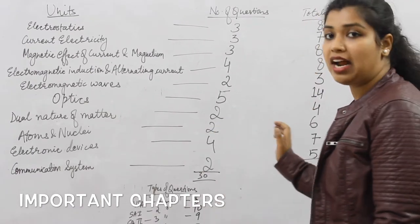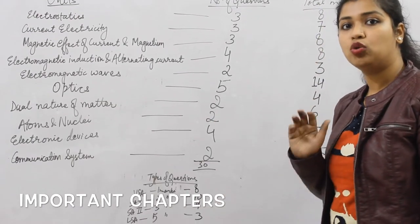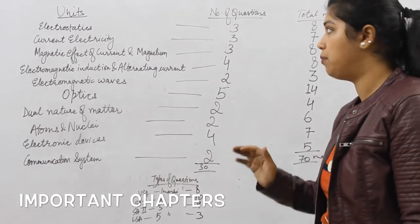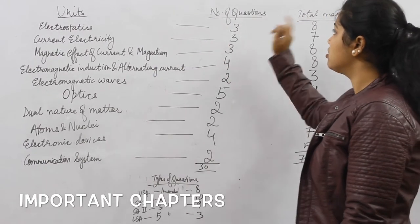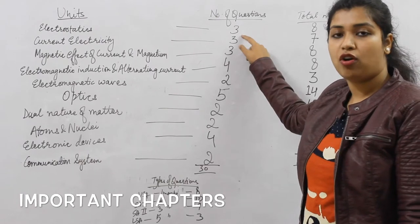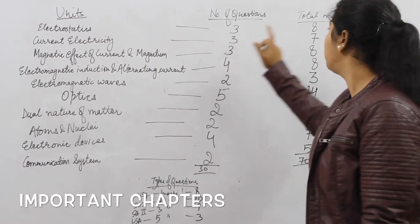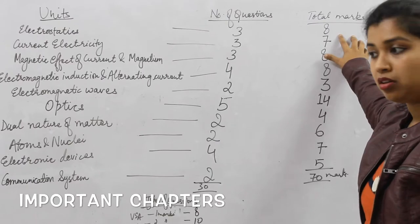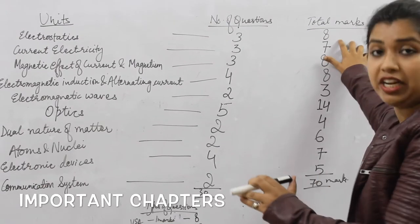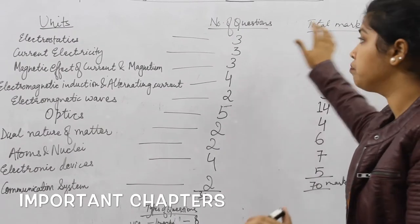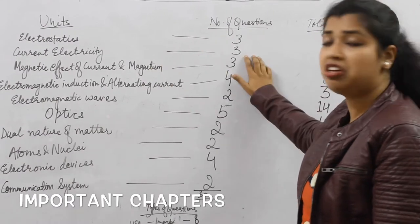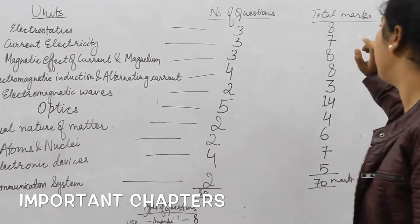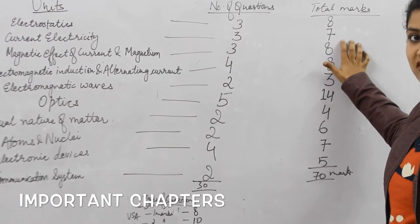Now if we look at the number of questions and the total marks of each chapter — the weightage. Electrostatics: three questions will be asked from this chapter and total marks will be eight marks. Then current electricity: three questions will be asked and the weightage given to this chapter is seven marks.